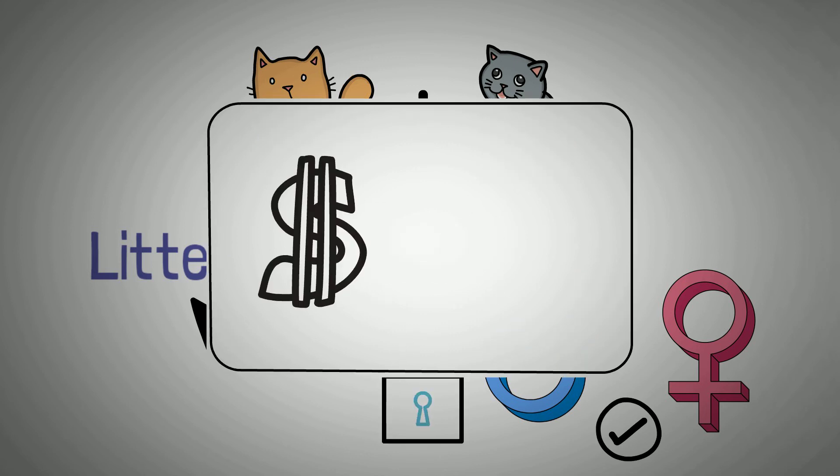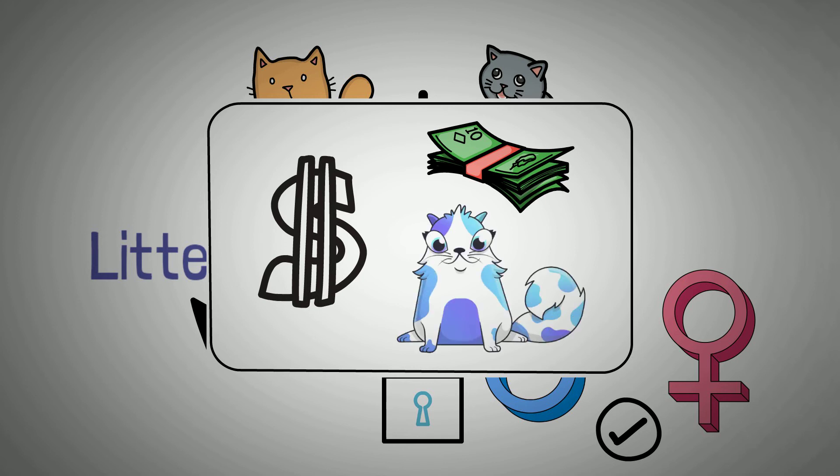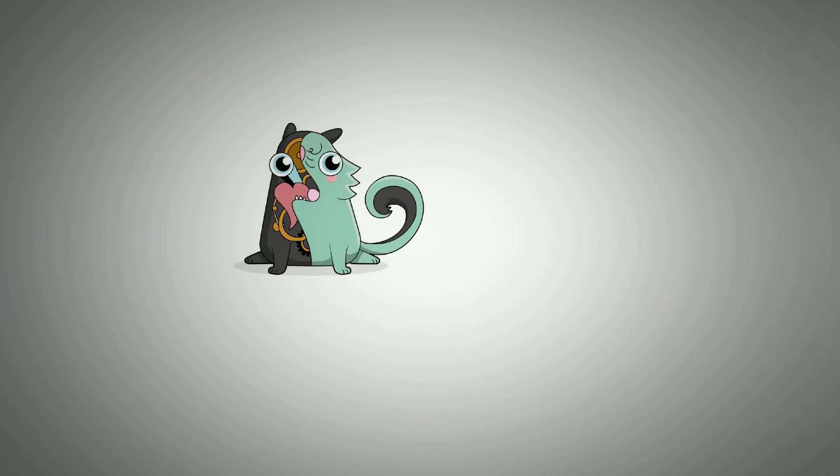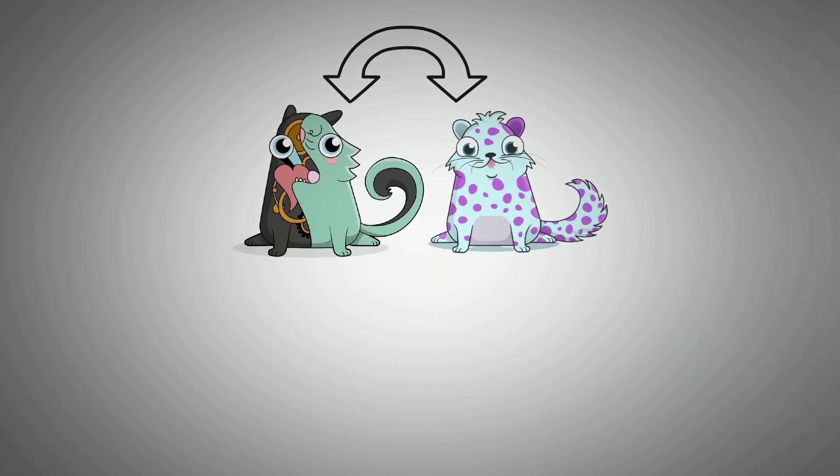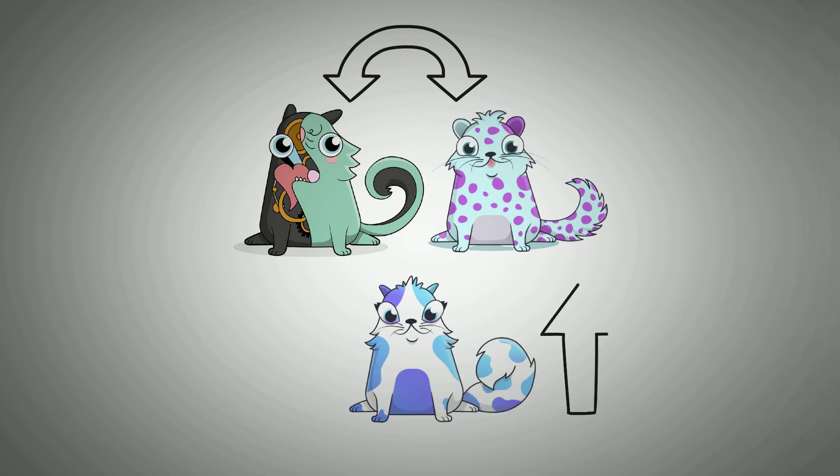This will open a transaction window where you pay the breeding fee that will allow the kitties to make new magic. You should crossbreed kitties of the same generation, as the resulting kitty will be a level higher than the parents.